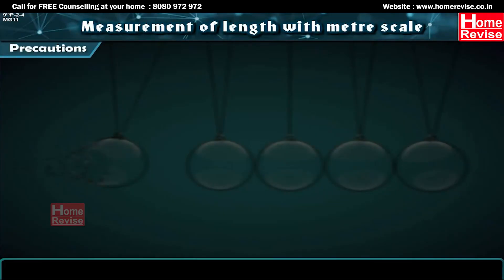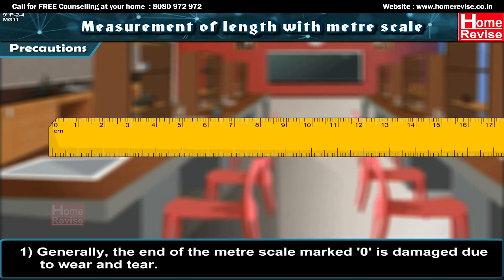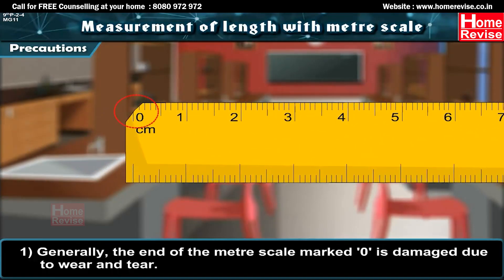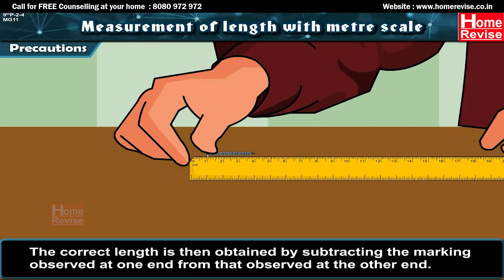While measuring length with a meter scale, three precautions should be observed. First, the end of the meter scale marked 0 is often damaged due to wear and tear. In such a case, one should measure from a graduation other than 0. The correct length is then obtained by subtracting the marking at one end from that at the other end.